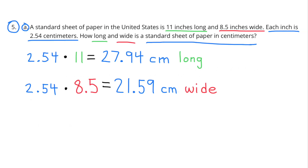Number 5A: A standard sheet of paper in the United States is 11 inches long and 8 and 5 tenths inches wide. Each inch is 2 and 54 hundredths centimeters. How long and wide is a standard sheet of paper in centimeters? 2.54 centimeters times 11 inches equals 27 and 94 hundredths centimeters long, and 2.54 centimeters times 8 and 5 tenths inches equals 21 and 59 hundredths centimeters wide.